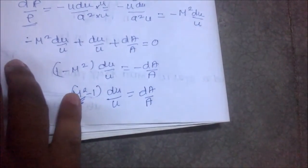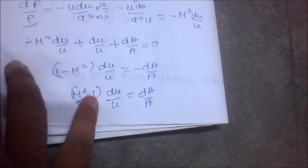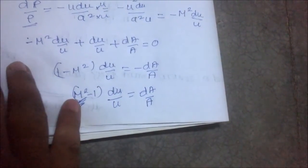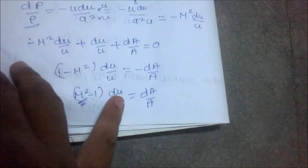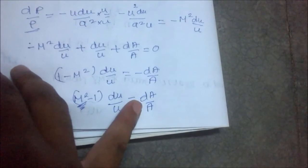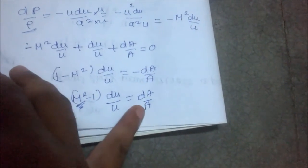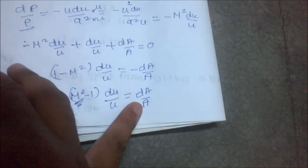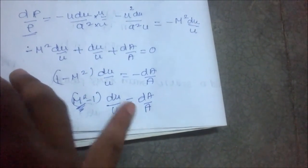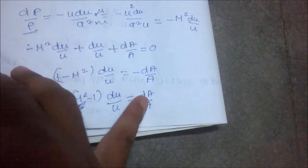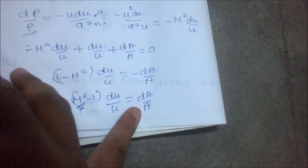If Mach number equals 1, the whole term equals zero. But that's not physically possible unless da/a reaches its minimum value. We call this the throat of the nozzle. So when M = 1, we have the minimum area, which we call the throat.